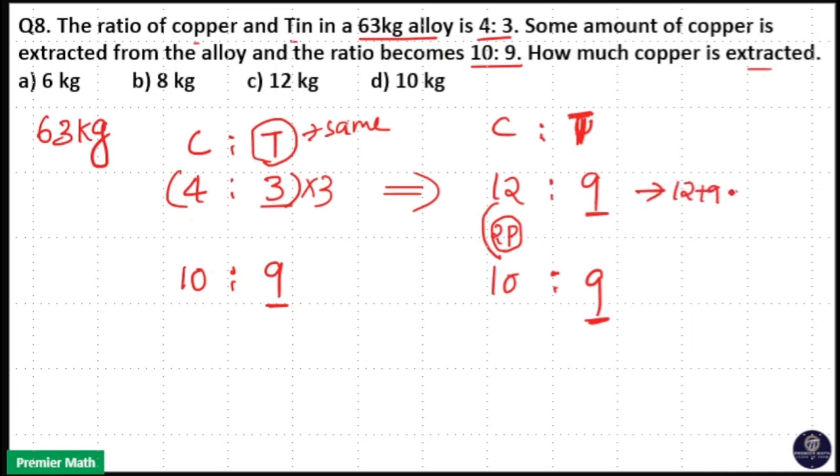12 plus 9 parts is equal to 63 kilogram. That means 21 parts is equal to 63 kilogram. So 1 part is equal to 3 kilogram. That means 2 parts is equal to 2 into 3.